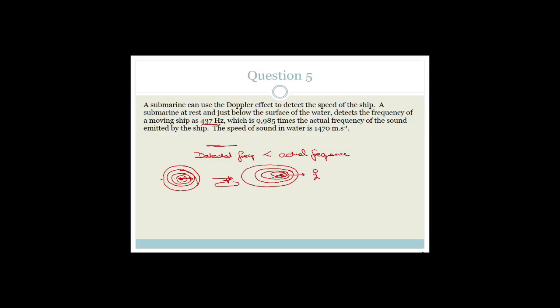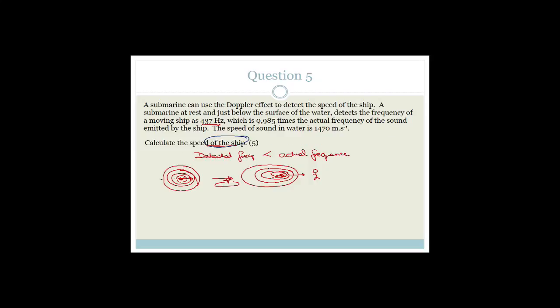We were busy looking at question five, which is about the Doppler effect. The question we had been looking at was: is the ship moving away from us or towards us? We said that since the detected frequency was lower than the actual frequency, the ship was obviously moving away. Now they say calculate the speed of the ship. The formula is on the formula sheet — please have your formula sheet out next to you at all times, whether you're doing physics or chemistry.